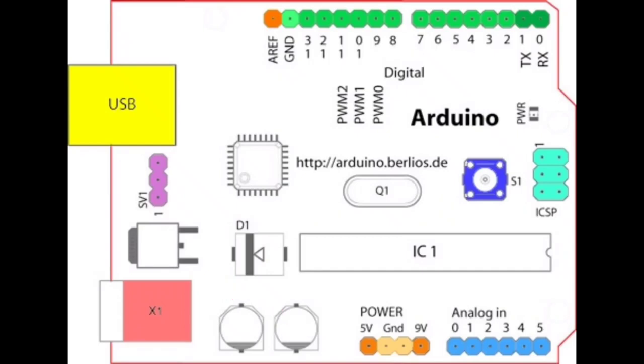This is an op-amp IC which is used as a comparator to compare the voltages and this is the regulator IC to convert 3.3 volt.